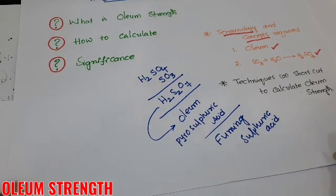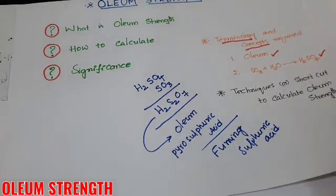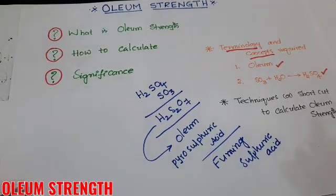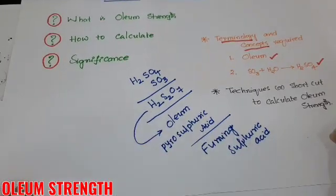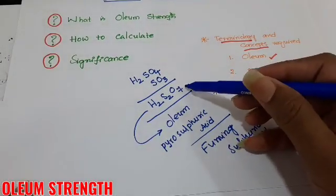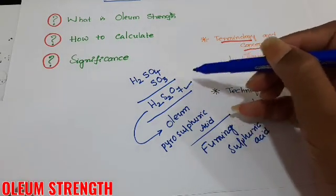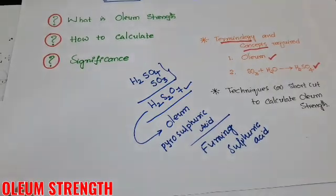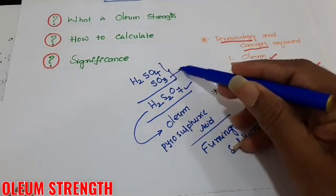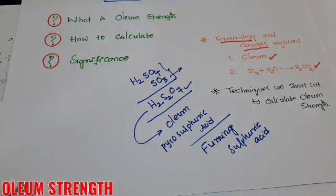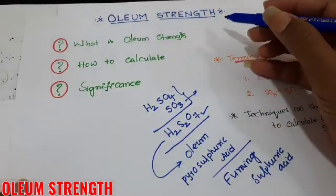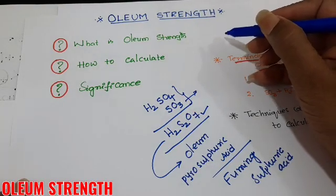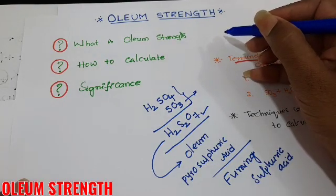Now, what is called volume strength? H₂S₂O₇ is a combination of sulphuric acid and SO₃. The percentage of SO₃ present in the oleum (volume) is expressed in terms of volume strength.